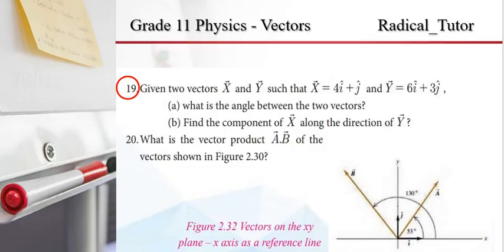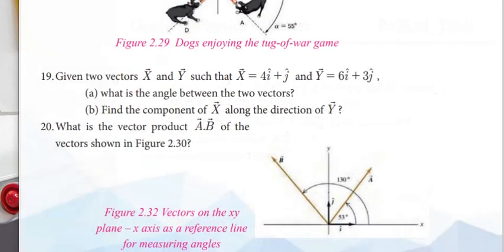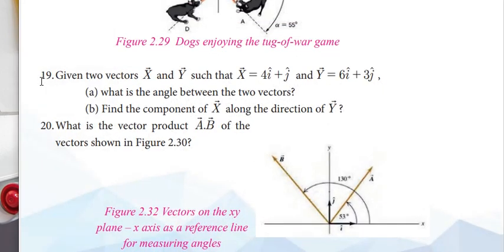Hello everyone, welcome to the radicals of the Grade 11 Physics Unit 2. This is question number 19 and question number 20. Given two vectors x and y such that x is equal to 4i plus j and y is equal to 6i plus 3j. What is the angle between the two vectors?